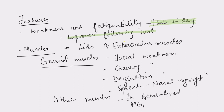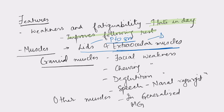The most commonly affected muscles are the lids and extraocular muscles. That is why the most common feature of myasthenia gravis is ptosis. Because lids and extraocular muscles — which are responsible for eye movement — are affected, there will also be presence of diplopia.